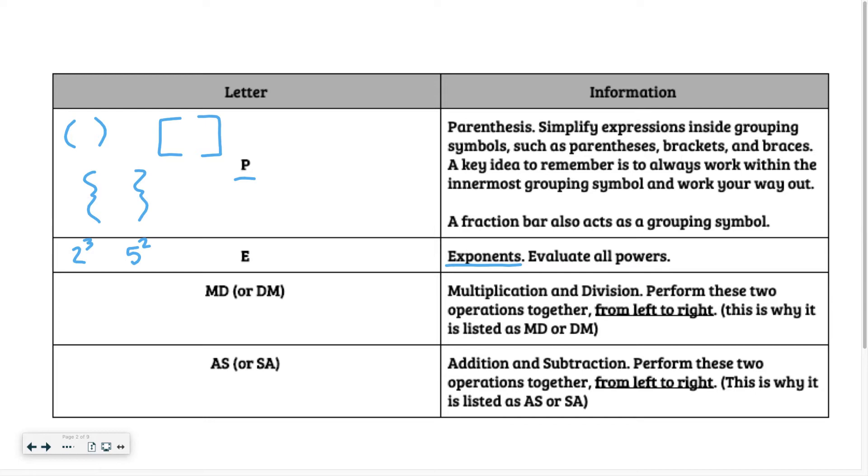M and D, or DM. MD stands for multiply and divide, but you always do it from left to right. That means division can come before multiplication. This is probably the biggest mistake I see with students using PEMDAS—they forget that multiplying and dividing goes from left to right. So sometimes division will come before multiplication.